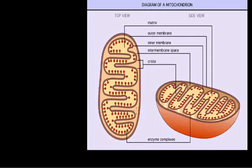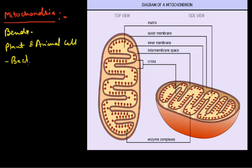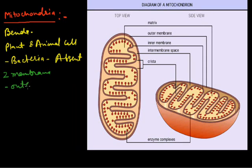The third important cell organelle is the mitochondria. The mitochondria is the powerhouse of the cell — it is responsible for the production of energy in the cell, so we also call it the power plant of the cell. Mitochondria was first reported by Kolliker, and its name was given by the famous scientist Wenda. This structure is present in plant cells as well as animal cells, but it is absent in bacterial cells. In bacteria, all respiratory activities occur in the cytoplasm.